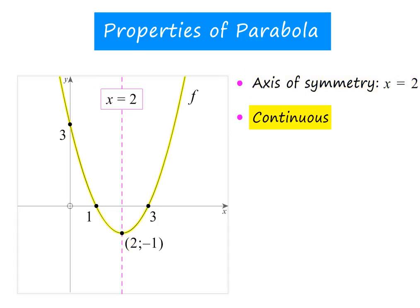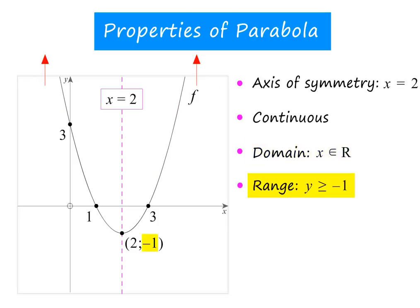A parabola is always continuous, because you can draw it without lifting your pencil. The domain is all real values of x, because the parabola extends forever to the left and right without any breaks. The range is all real values of y greater than or equal to minus 1, because starting at minus 1, the parabola extends up forever without any breaks.